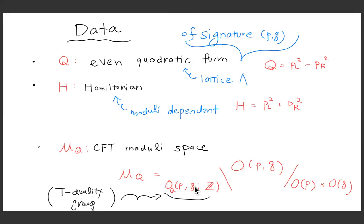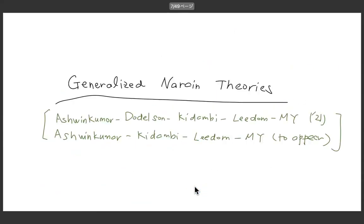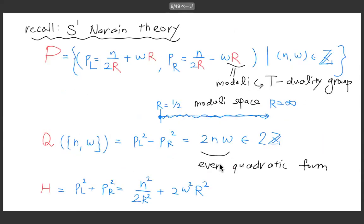Typically, these are homogeneous spaces. A simple example with different quotients is the upper half-plane. That space is non-compact — even in the S1 case, for example, there is a radius which runs away to infinity.